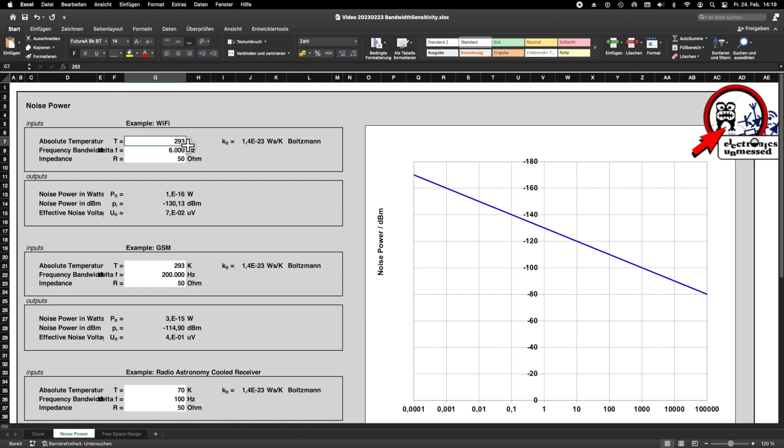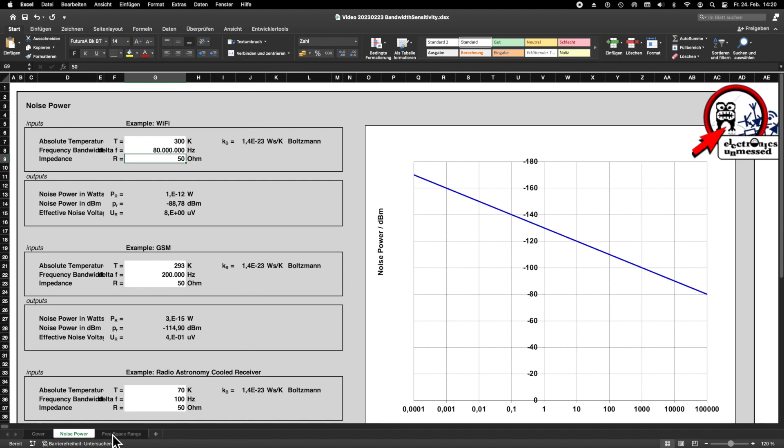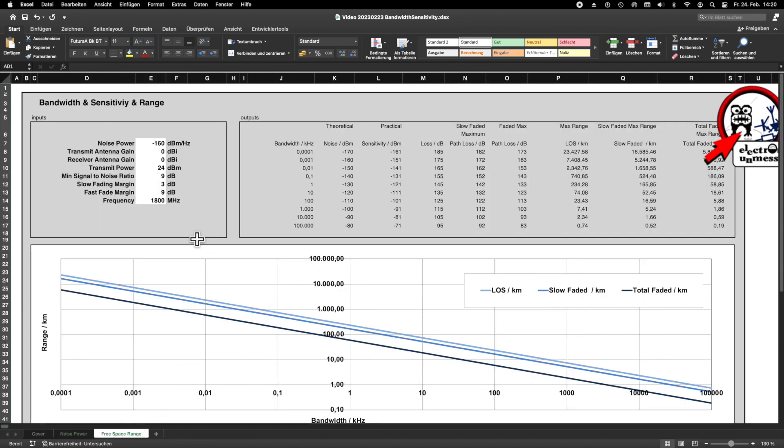It is very simple. As a default there are even three examples in which the noise power and a few other values are calculated. I just use that now. By the way, the second page of the tool is also very interesting because here you can evaluate the relation between the range and the bandwidths for any system. If that interests you, I will be happy to explain it later. Just comment me on that.